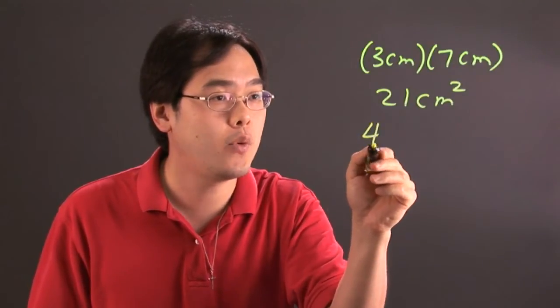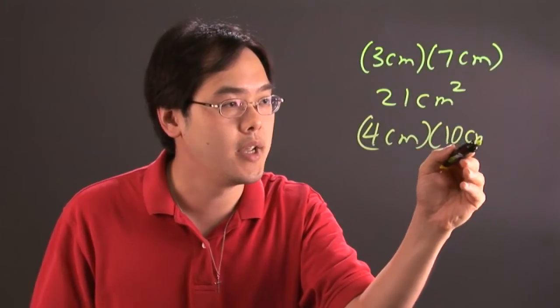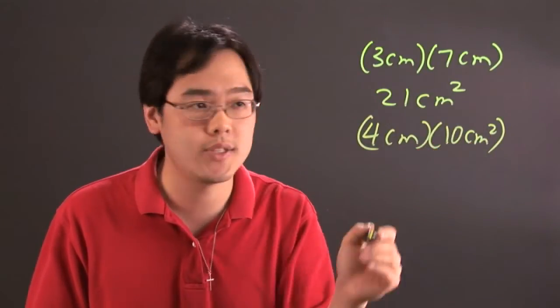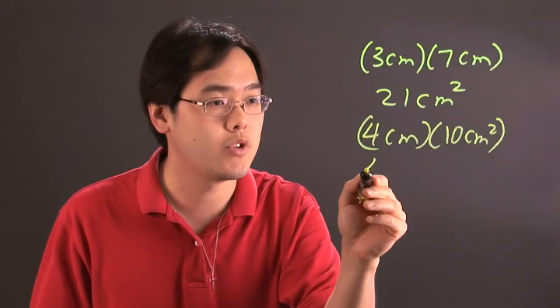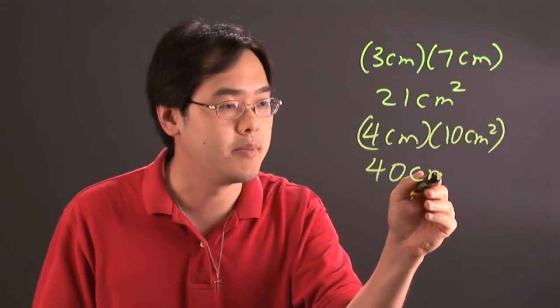Now, suppose you have 4 centimeters times 10 centimeters squared. Same kind of idea. You multiply the numbers and the units. So 4 times 10, which is going to be 40, and centimeters times centimeters squared is centimeter cubed.